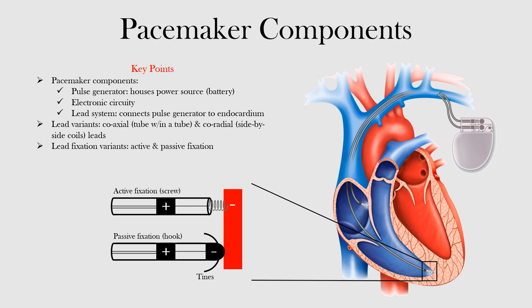The leads deliver a depolarizing pulse to the myocardium. These leads are also capable of sensing intrinsic electrical activity, which we will discuss further in a later lecture. The leads are introduced into a larger vein, such as the subclavian vein, and then guided into the heart where they contact and interface with the endocardium.